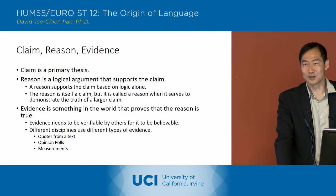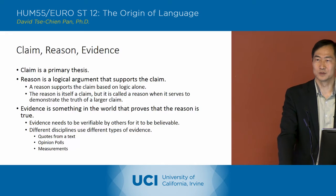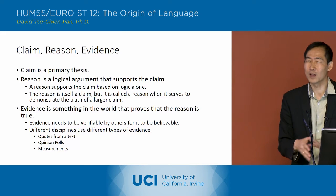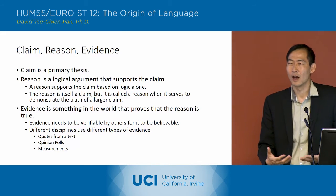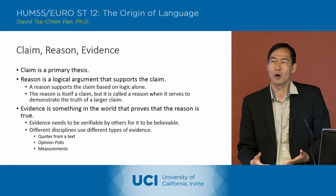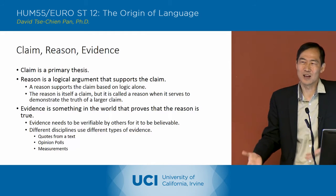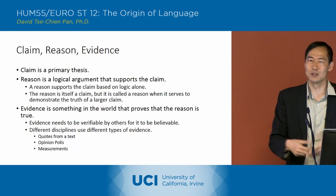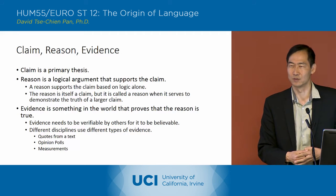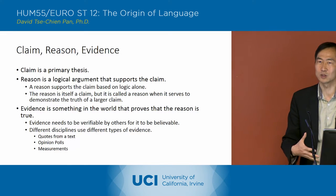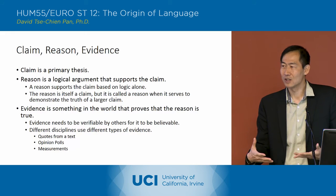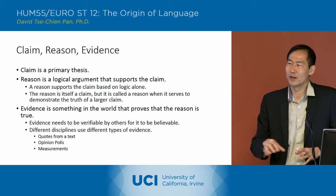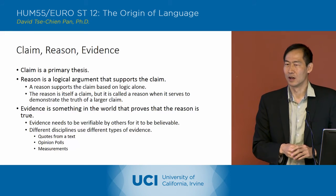So those are the three basics of every argument — they all contain those three parts, otherwise something is missing. Often when you're reading texts, you'll see two of the parts, and one of the parts is not very clear or explicitly stated but implied, and you'll have to fill in the blanks to describe the full argument of the text. A lot of what we're going to be doing this quarter is analyzing arguments and identifying these different components.